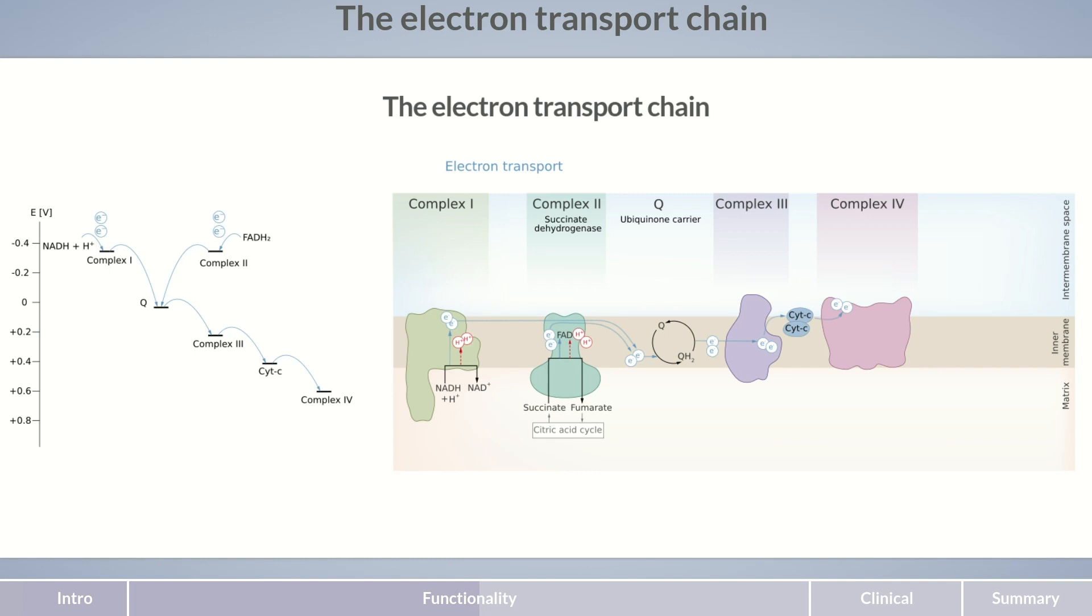Here, the electrons need to leave the electron transport chain to prevent the process from stopping. For this, the electrons are transferred to oxygen. In this reaction, one molecule of oxygen yields two molecules of water. For each water molecule, two electrons and two protons leave the electron transport chain. Because oxygen serves as the final electron acceptor of the electron transport chain, the entire system depends on aerobic conditions.